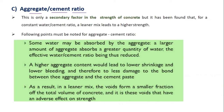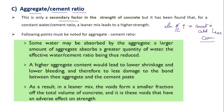The aggregate-cement ratio is also going to influence the strength of concrete. This is a secondary factor influencing the strength of concrete. When the aggregate-to-cement ratio is high, the concrete is called lean concrete. A leaner concrete has a high amount of aggregate compared to the cement that has been added.